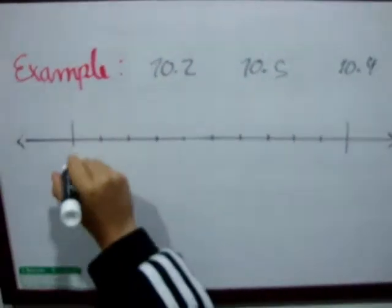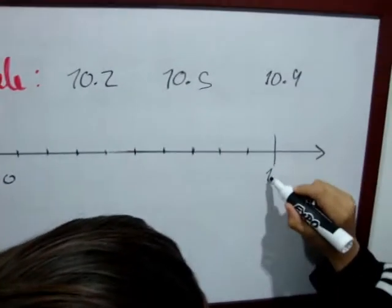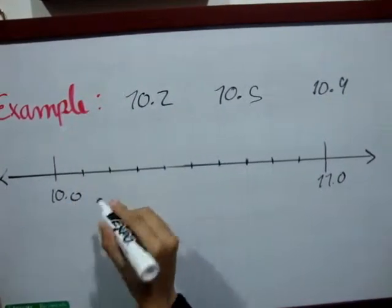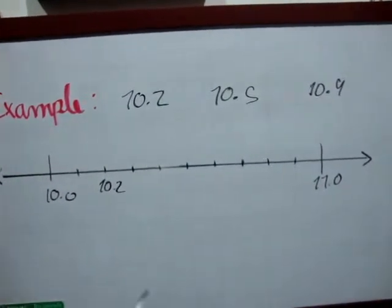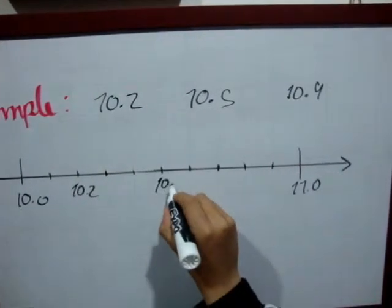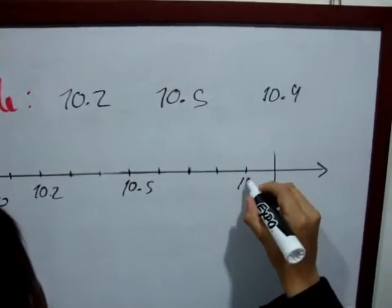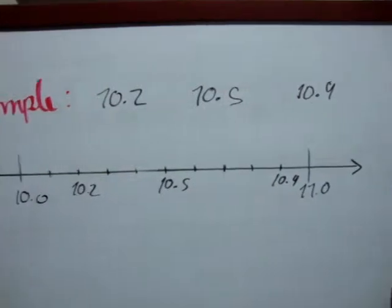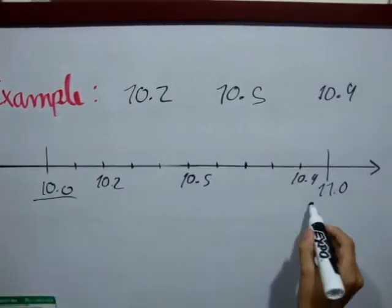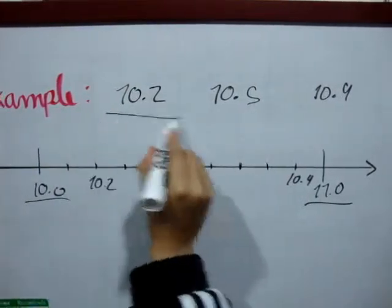We put 10 here, 11 here. We count: 1, 2, 3, 4, 5, 6, 7, 8, 9. These two are very important because they are the divisions of these numbers.